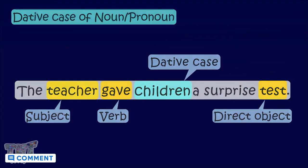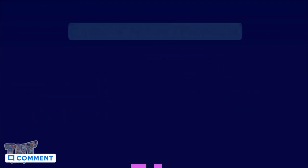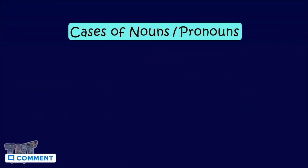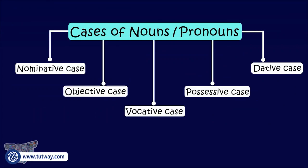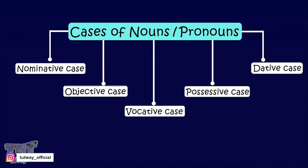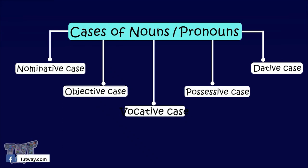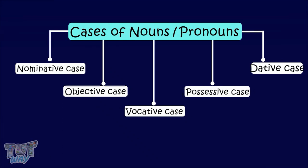So friends, we have learned about the cases of nouns. There are five cases of nouns and pronouns in English: the nominative case, the objective case, the vocative case, the possessive case, and the dative case.